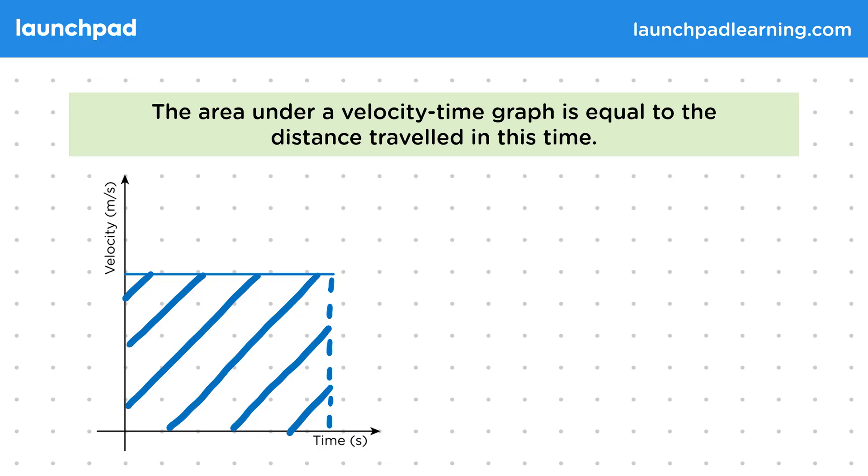First, let's remind ourselves about the relation between speed and distance. This is the equation: speed equals distance travelled divided by time. Or in equation form, this is v equals s divided by t, where v is the speed, s is the distance, and t is the time.